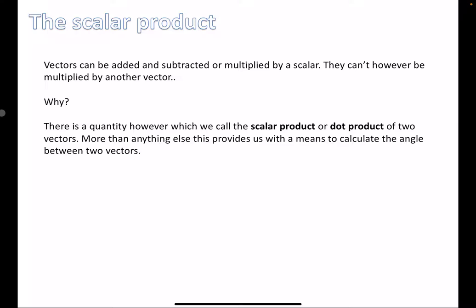The scalar product is when we kind of multiply two vectors together, but more than anything else, this provides us with a means to calculate the angle between vectors. It's a strange concept — the scalar product or dot product — and it's basically there to allow us to find the angle between two vectors. There are two means to get the dot product, and we need one to help us with a formula for the other.